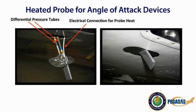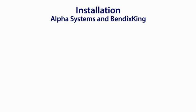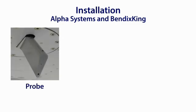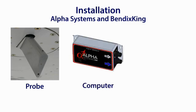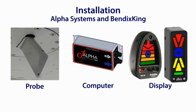It is recommended that probe heat be installed if the AOA system will be utilized in the IMC environment. The Alpha Systems and Bendix King devices utilize a three-part system: a probe that attaches to an inspection panel on the bottom of the aircraft's wing or fuselage, a computer to process inputs from the probe placed out of sight — usually in the aircraft's cockpit — and the display unit. Installation is simple for aircraft with inspection panels; for aircraft without inspection panels or that are made of fabric, installation is more complicated but not impossible.